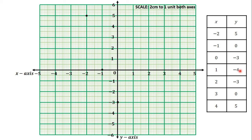The next point is 1, negative 4 — 1 on the x-axis and negative 4 on the y-axis, plotted here. Then 2, negative 3 — 2 on the x-axis and negative 3 on the y-axis, plotted here. Next is 3, 0 — 3 on the x-axis and 0 on the y-axis, plotted here. Finally, 4, 5 — 4 on the x-axis and 5 on the y-axis, plotted here.